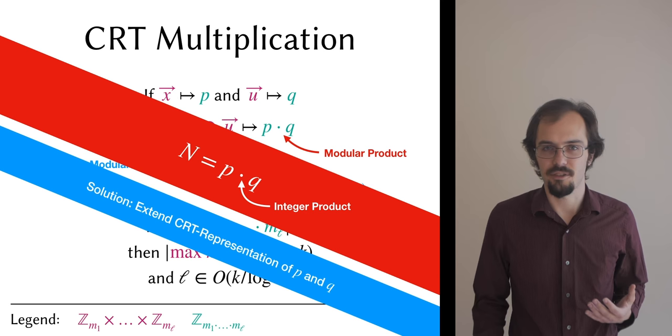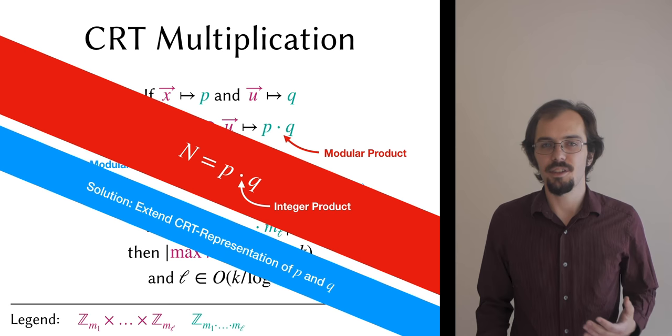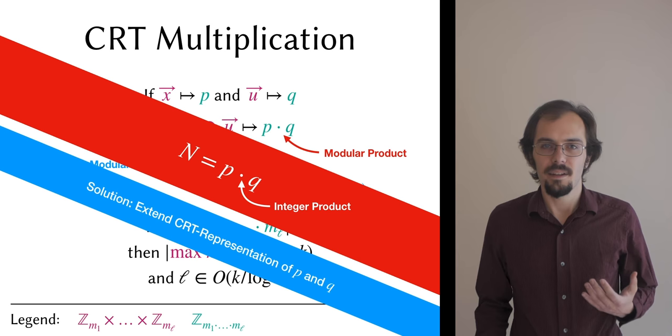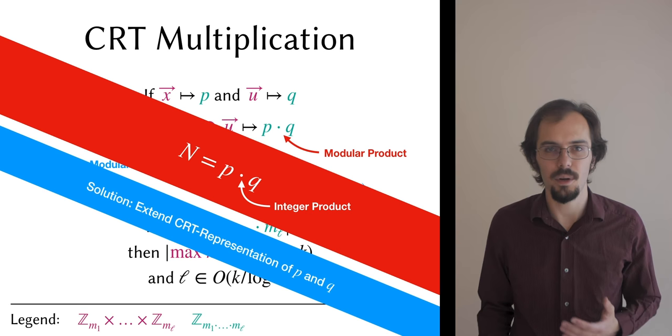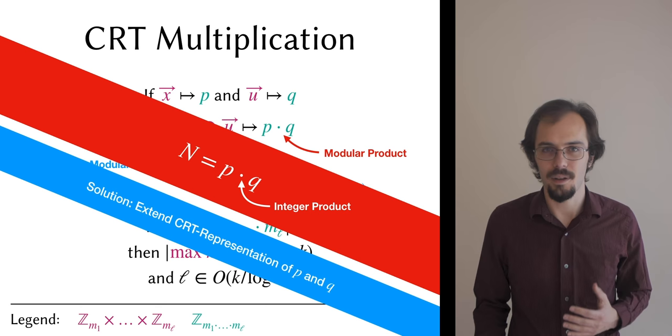Before we move on, I should mention that because this CRT extension operation is local, corrupt parties can do whatever they want. And since there's no authentication on the output shares of our element-wise multiplication, corrupt parties can lie about the shares that they got. I haven't taken pains to show you how we achieve malicious security here, so it's important to know that even in the malicious version of our protocol, this sort of cheat is still possible, and we have to account for it later in our consistency check.